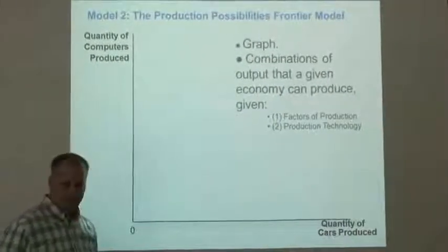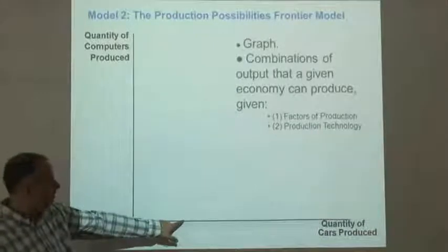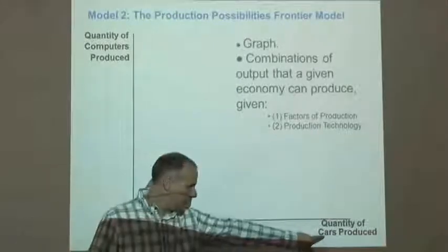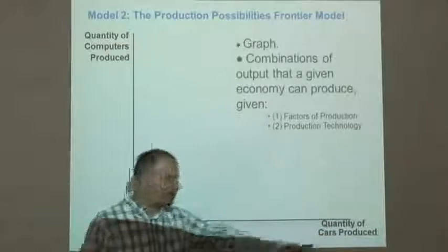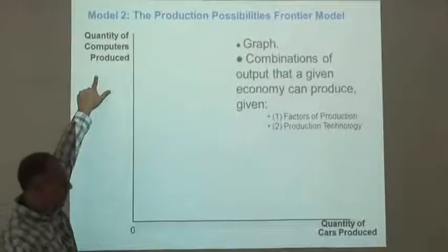The production possibilities frontier is a graph in two dimensions. In this simplification, we're going to consider an economy that produces exactly two things: they produce cars and they produce computers.